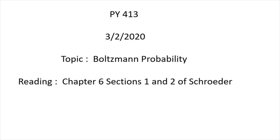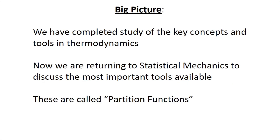Hi everyone, we're starting chapter six today. The topic is going to be Boltzmann probability. We need to be reading chapter six, especially sections one and two of the textbook to stay up. This week we're going to go kind of slowly through sections one and two because it's really super important. We're moving on from thermodynamics, which we finished in chapter five, and we're going to return to statistical mechanics to pick up the most important tools in that field. The tools are called partition functions — we'll introduce those explicitly not in this lecture but in the next one.